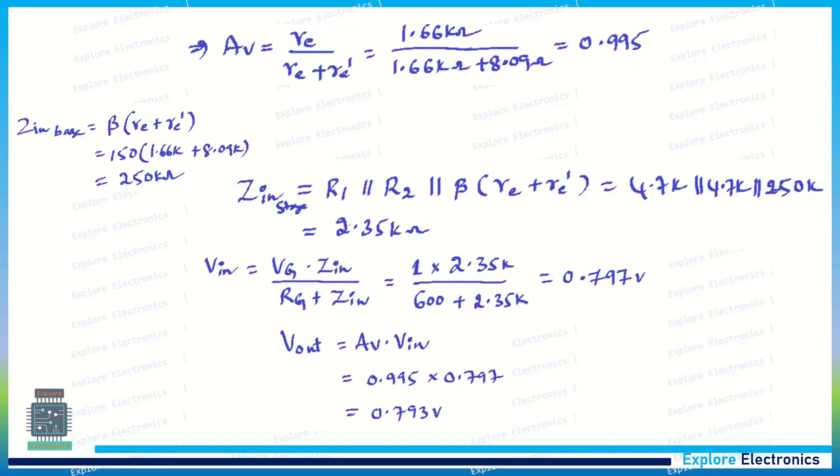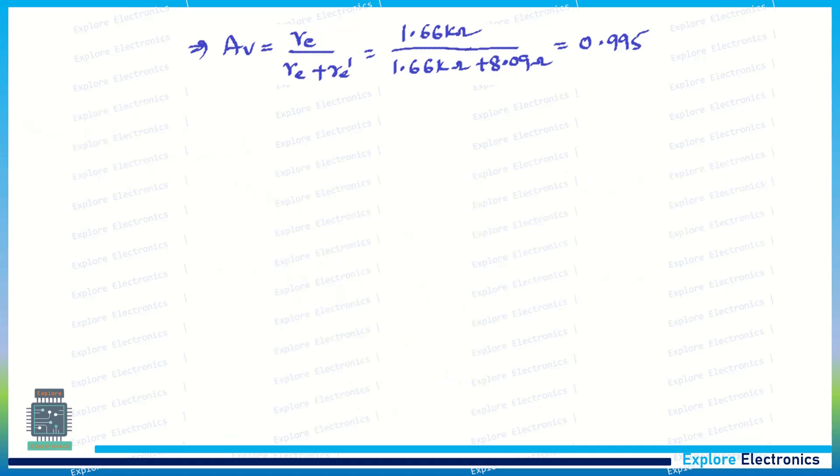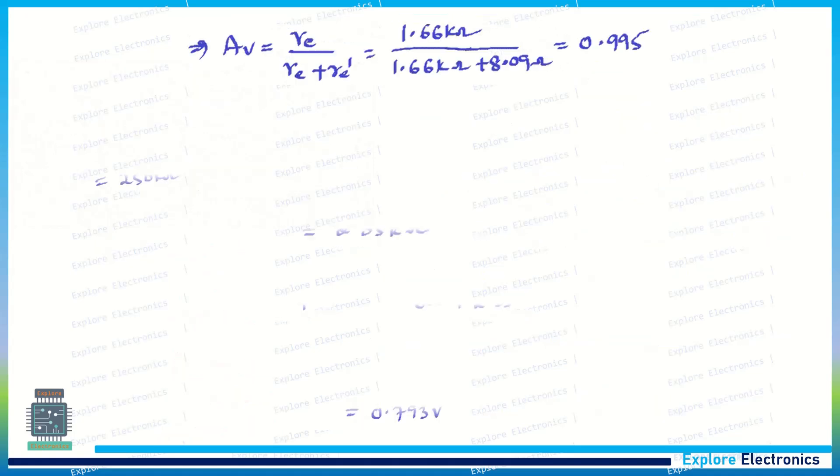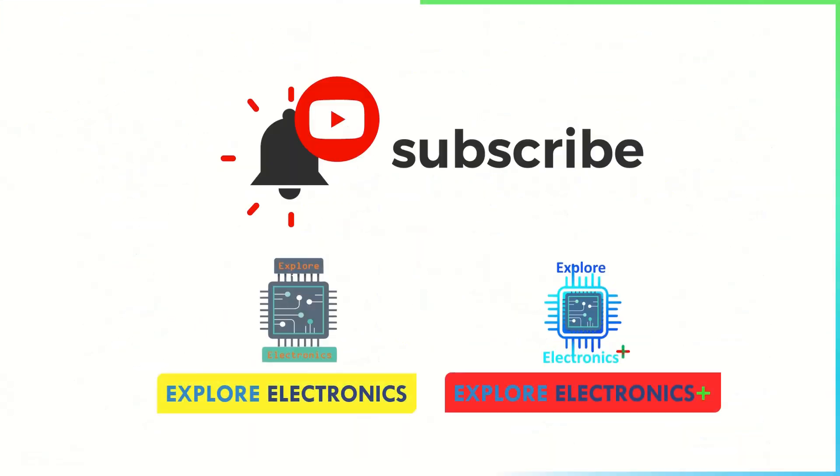That gives the output voltage with 1V Vg as 0.793V. This is the calculation of the output voltage, the AC load voltage, as well as the voltage gain of the emitter follower. Thank you.